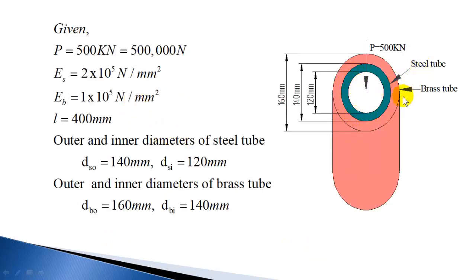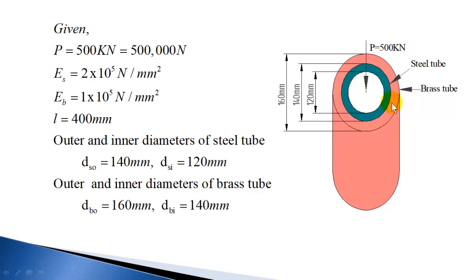The figure shows the steel tube and brass tube, and this compound tube is subjected to an axial compressive load. This is actually hollow — it's a tube — so the load should be transmitted to this tube. It might be covered with a plate and then subjected to a load. So on top there will be a covering and the load will be acting on that, which will directly transmit the load to these tubes. Since the steel tube has internal diameter 120 mm and 140 mm, and the brass tube has inside diameter 140 mm and 160 mm, you can identify which tube is inside. The load is 500 kN, so 500,000 N.